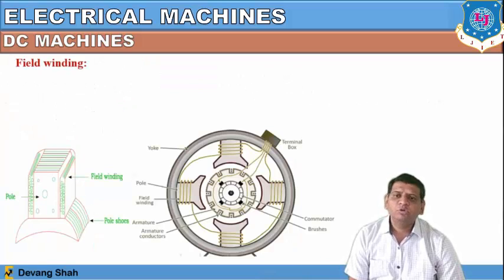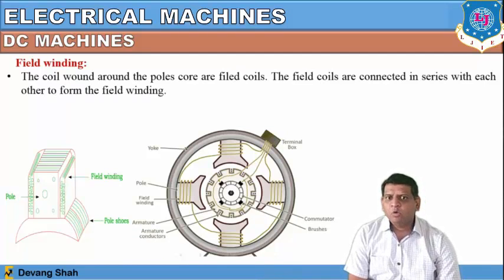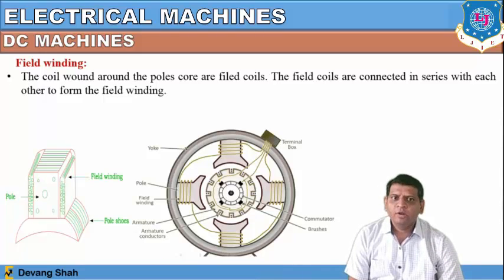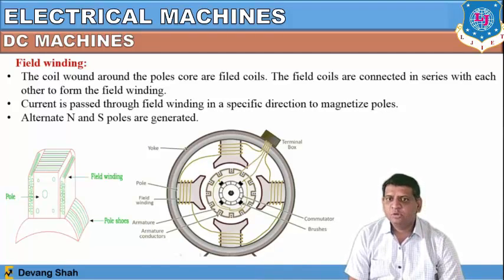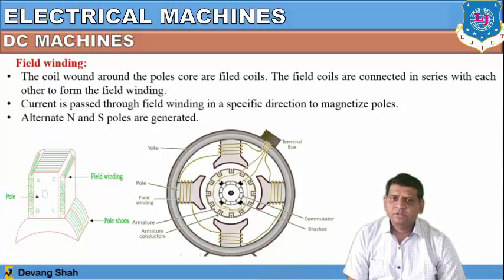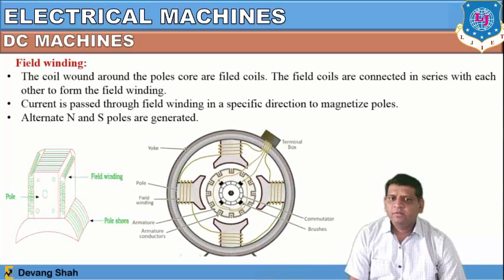Regarding field winding: the coils wound around the pole core are defined as field coils, and the field coils are connected in series with each other to form the field winding. Current is passed through the field winding in a specific direction to magnetize the poles. The alternate N and S poles are placed together — if one is N, the next is S — generating alternate poles. Because of this, once the winding carries current, there is a production of magnetic flux inside this gap.